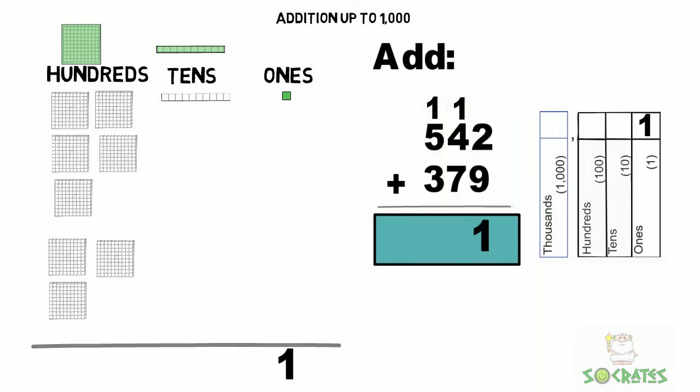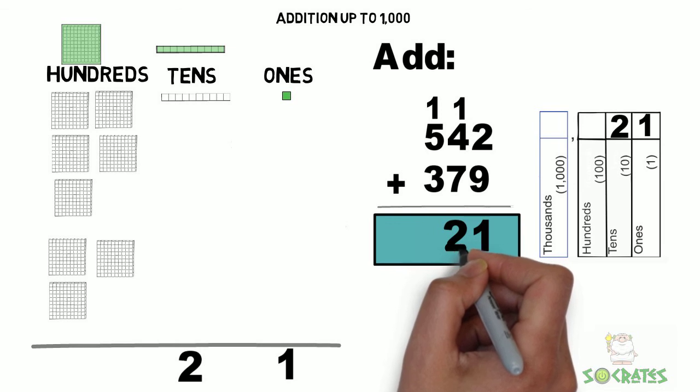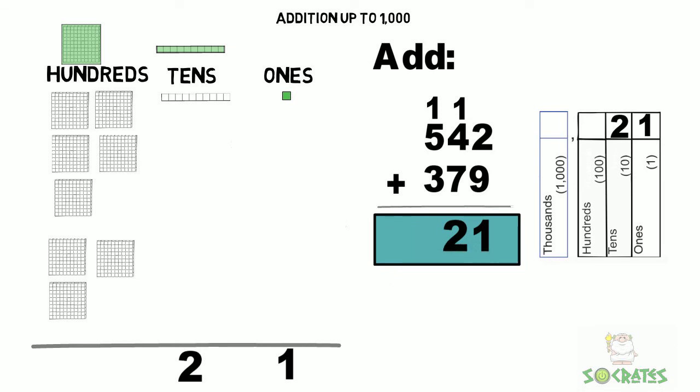Now let's add the hundreds together. We have 8 hundreds plus 1 more, which gives us 9 hundreds. So the correct answer is 921.